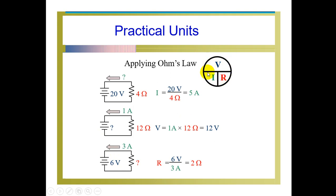So when you want to find out the voltage applied, go for I multiplied by R. If you want to find out the current flowing through the circuit, go for V upon R. If you want to find out R, then R is equal to V upon I. Like that, we can remember Ohm's law for calculating practical units.